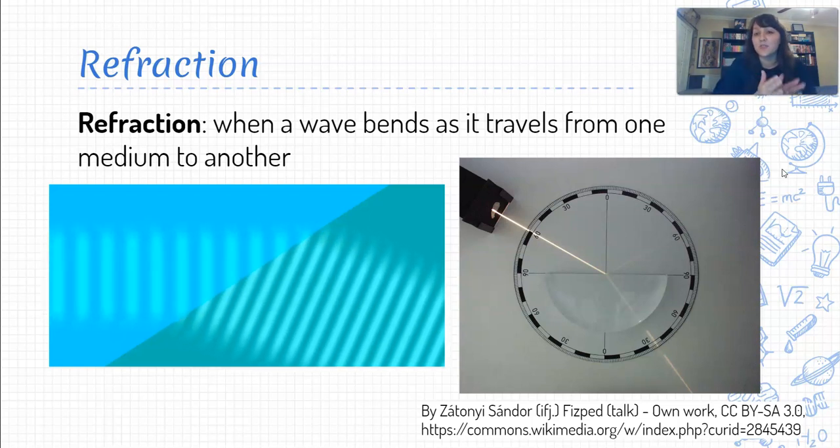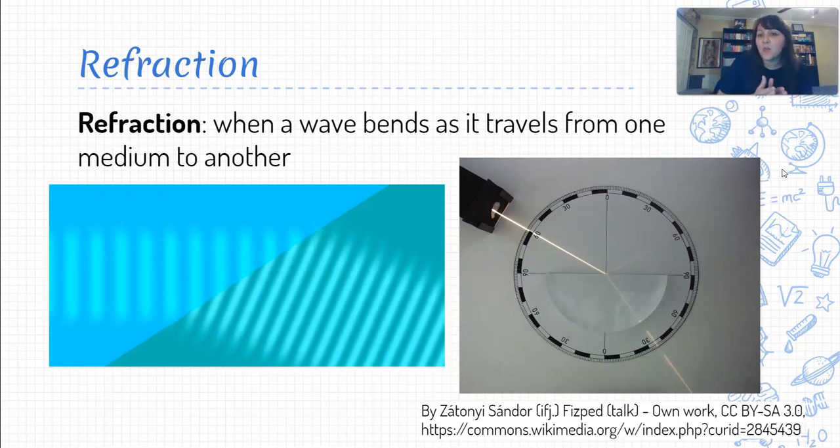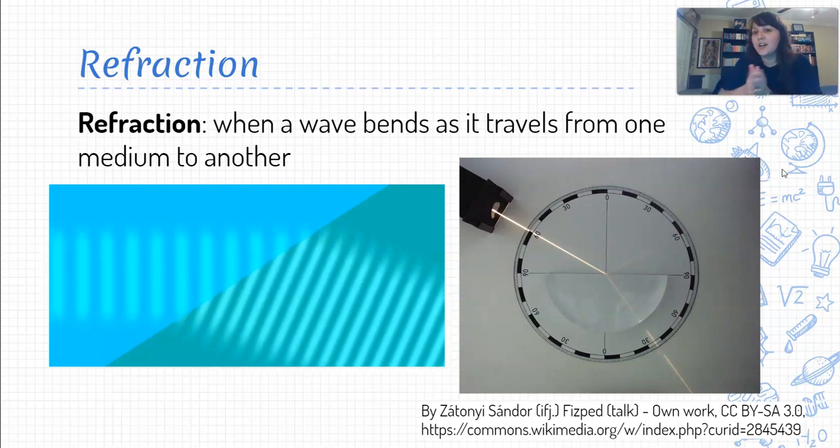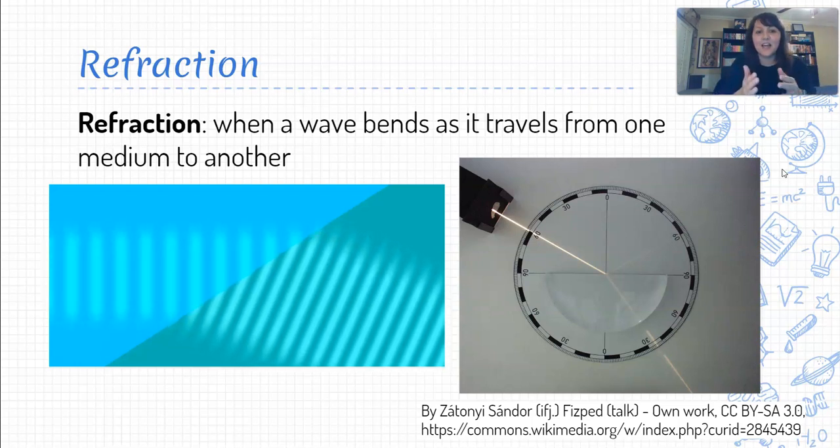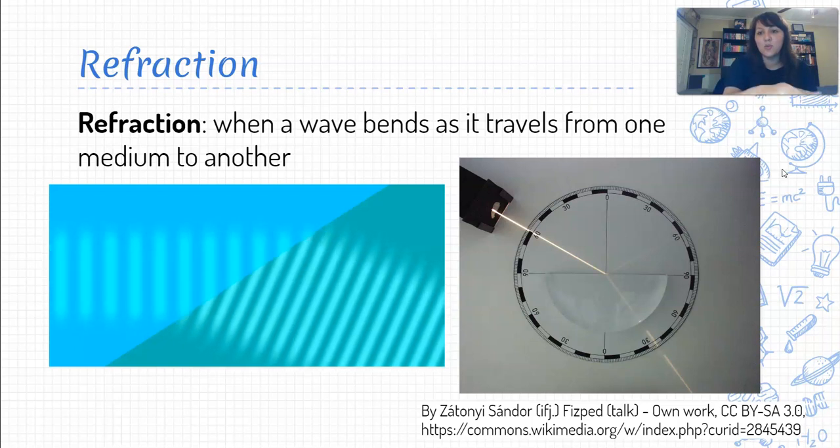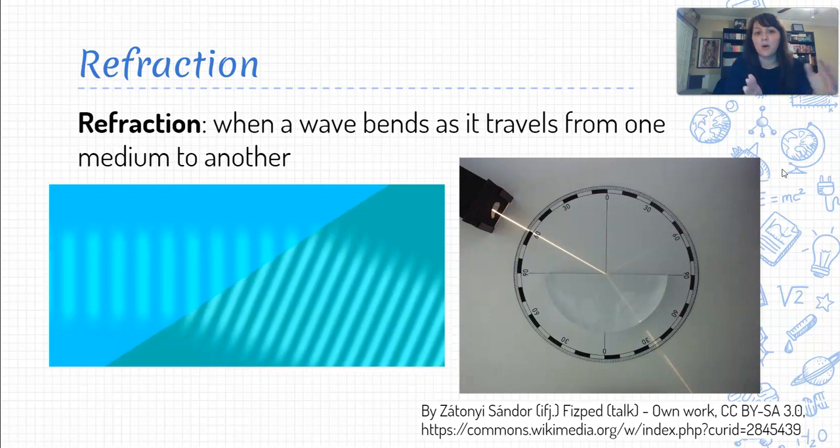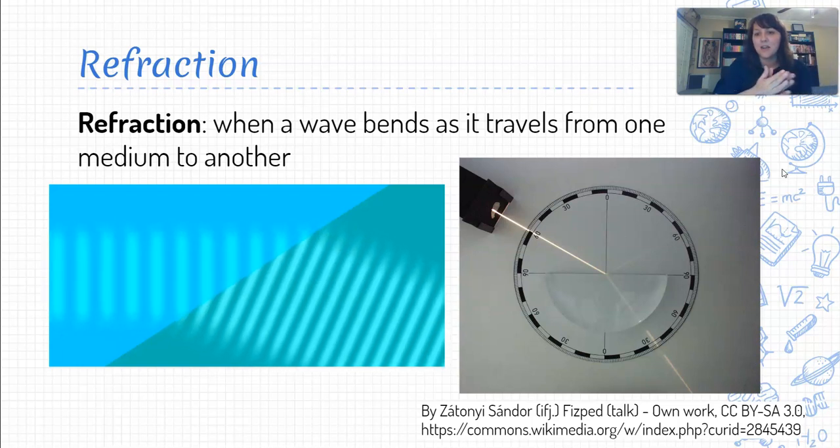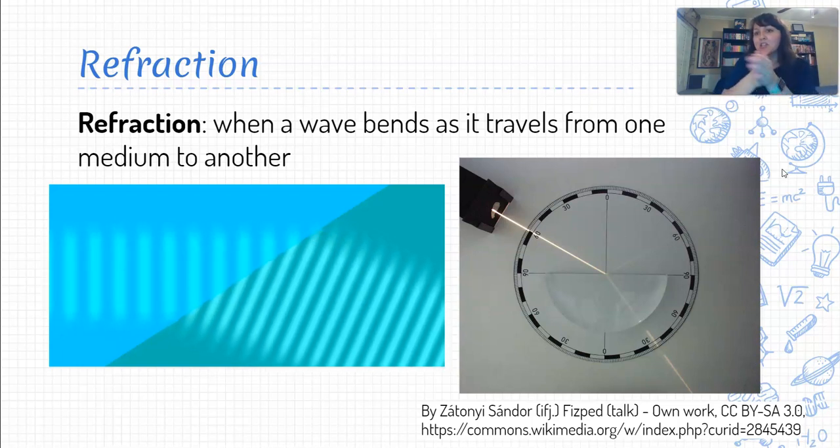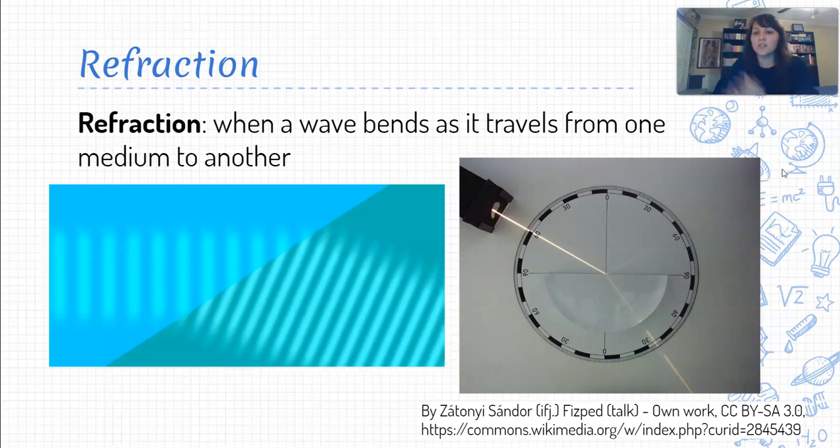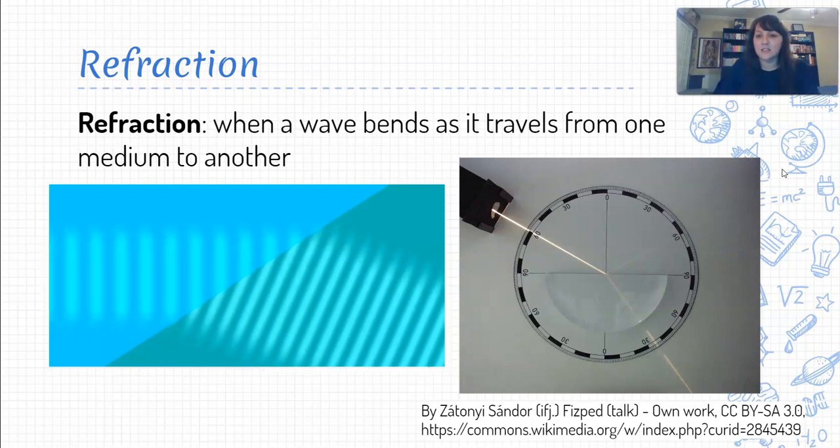And as a result of that shift in speed, it will actually turn a little bit that the side of the wave that hits that new medium sooner will move in this case more slowly than the part of the wave that hasn't hit that medium yet. And so the whole wave ends up kind of like turning towards the medium that in this case, it's moving slower in.